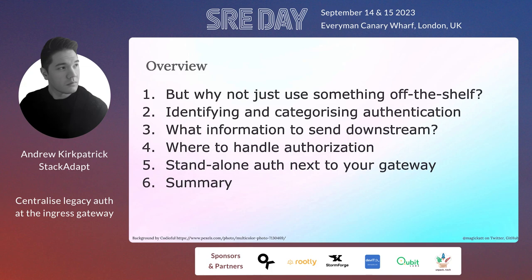To summarize what we're going to talk about: why wouldn't you just use something off the shelf? How do you identify and categorize what kind of authentication types you want and need based on your codebase? What information, once you've authenticated, would you want to send to downstream services? How do the other services behind the gateway interpret that? At what point do you actually handle authorization? And how do you run that standalone service next to your gateway?